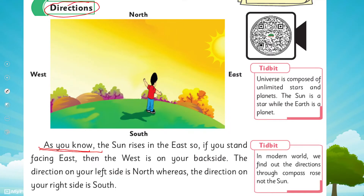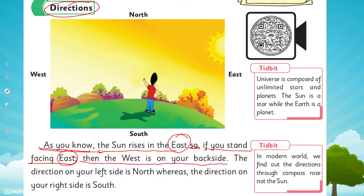As you know, the Sun rises in the east. So if you stand facing east, then the west is on your back side, the direction on your left side is north, whereas the direction on your right side is south.